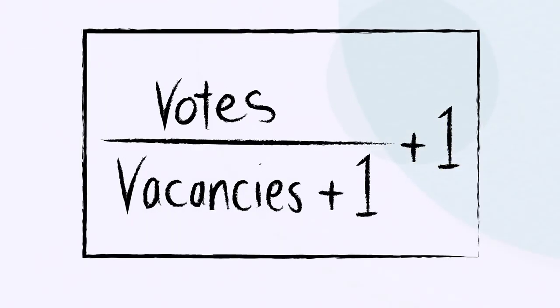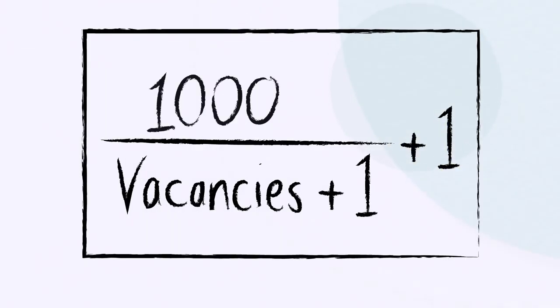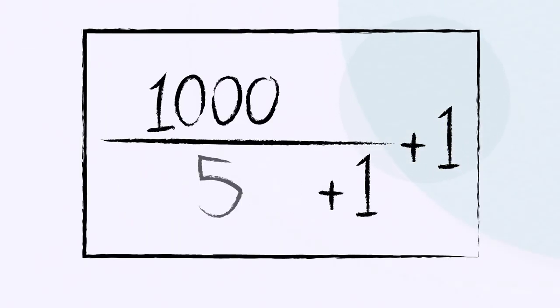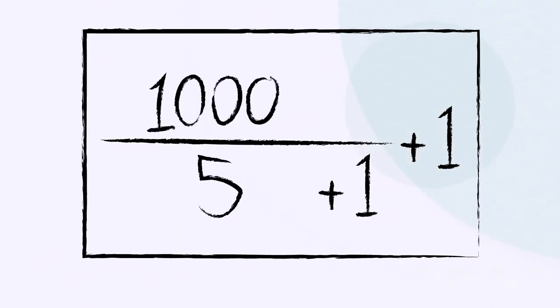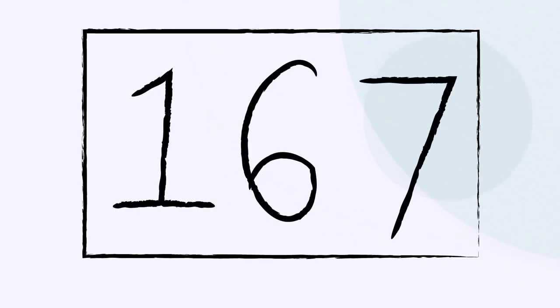For example, if you had 1,000 formal votes and 5 vacancies, a candidate would need a quota of 167 votes to be elected.